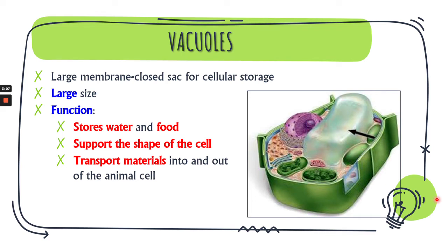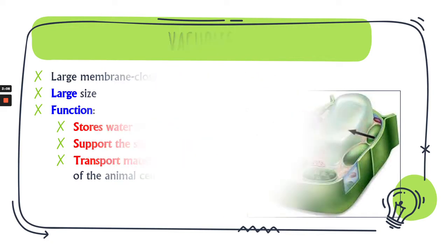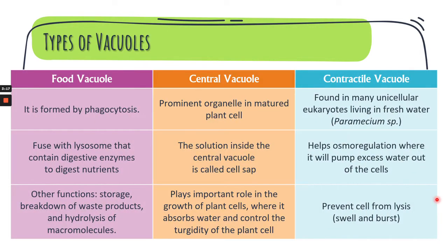There are three different types of vacuoles. The first is food vacuoles, which are formed by phagocytosis. Food vacuoles fuse with the lysosome to be digested by enzymes. Other functions of food vacuoles include storage, breakdown of waste products, and hydrolysis of macromolecules.